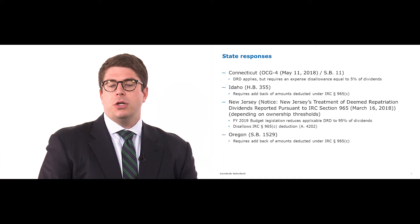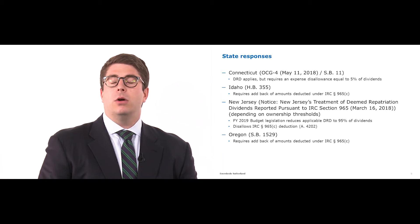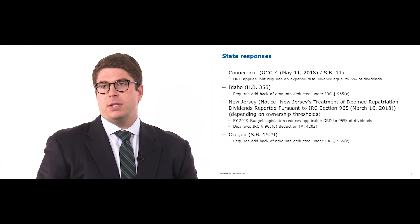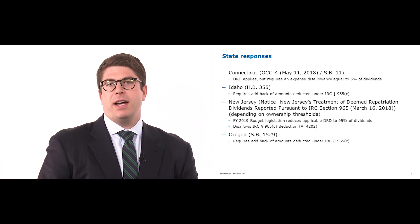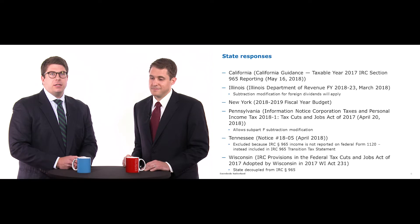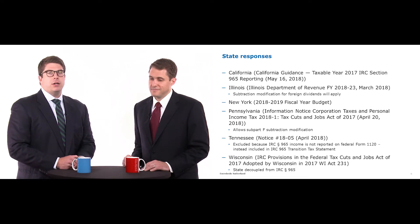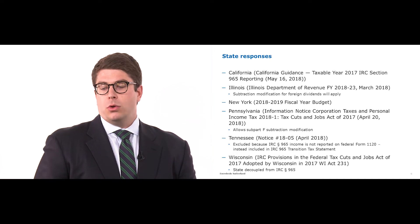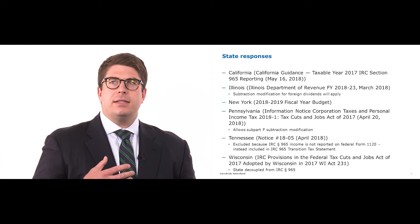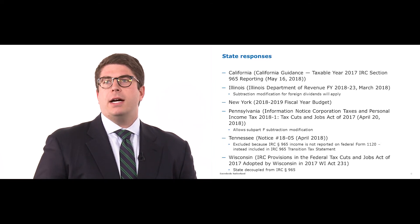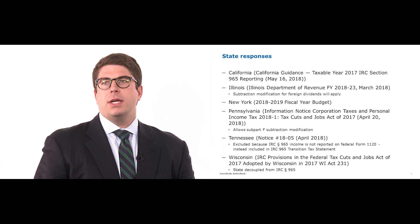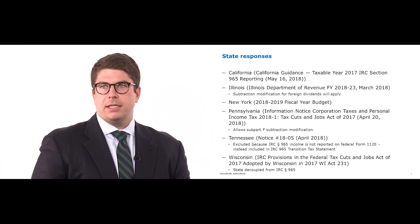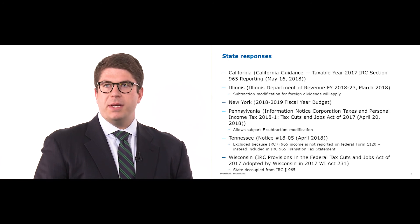For example, New Jersey amended their law recently to now limit the DRD to 95% of the dividends received, so you basically get a 5% inclusion of that 965 amount. Another example are those states that have either fully decoupled from 965 and are not including the amounts, or are excluding them as general subpart F income or — like New York — as exempt CFC income. Each state then has specific reporting requirements on whether you are required to include the IRC Section 965 statement with your state return. New York recently issued guidance stating that taxpayers are required to add back the interest deductions related to that 965 inclusion amount.